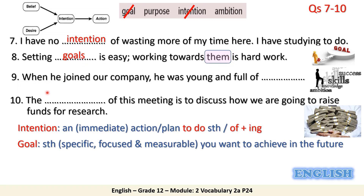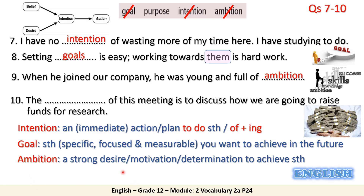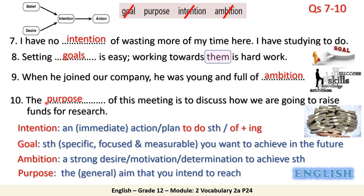Number nine: when he joined our company, he was young and full of ambition. Ambition means a strong desire, strong motivation, or determination to achieve something. Number ten: the purpose of this meeting is to discuss how we are going to raise funds for the research. Purpose is the general aim that you intend to reach.